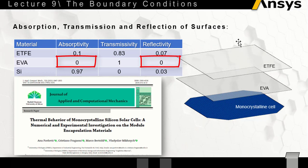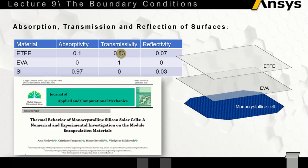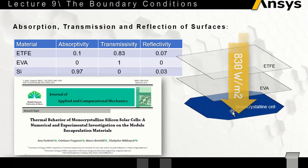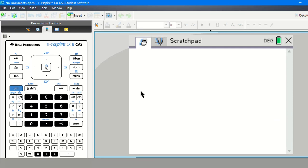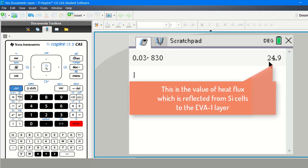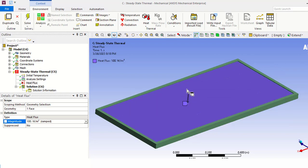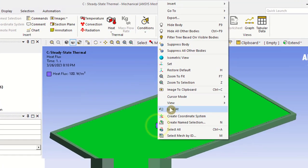At the EVA layer, we assume it is fully transparent — no absorption, no reflection. Therefore, all the remaining flux, equal to 830 watts per meter square, will be incident on the silicon cell. At the silicon cell, there is a reflectivity of 3%, so 3% of 830 watts per meter square equals approximately 25 watts per meter square reflected.